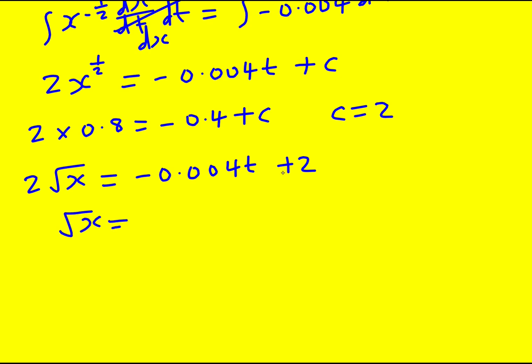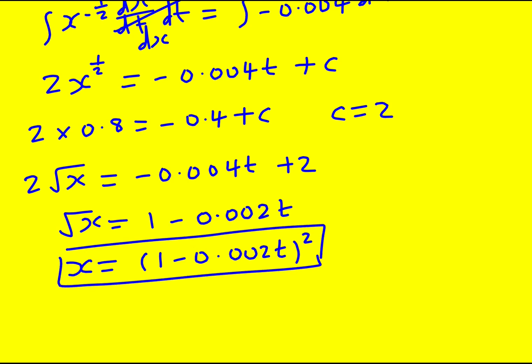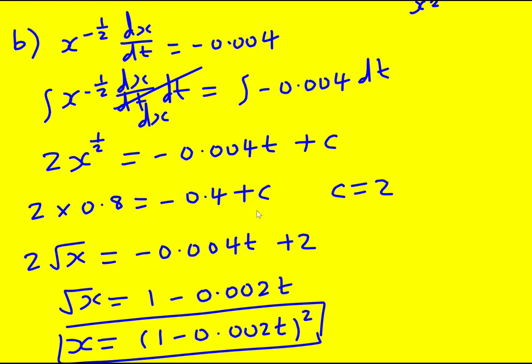Which means the square root of x is going to be 1 minus 0.002 t. I've just rewritten it slightly, and therefore x is going to be this squared. Okay, good solution to this equation.